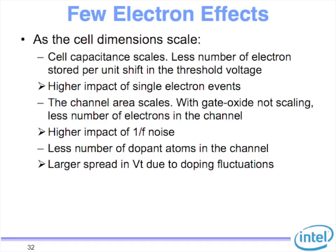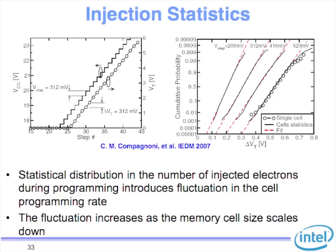We have fewer electrons in the floating gate and also fewer electrons in the channel. If you have some interface states where electrons go in and out, you're going to have 1/f noise, but the impact of that is going to be very large. In addition to that, you are talking about literally hundreds of angstroms of area, so random dopant fluctuations also become very tricky. Work from Micron and ST shows that the statistical distribution in the number of injected electrons during programming introduces fluctuations in the cell — if I try to put 100 electrons, you're going to have variability due to number fluctuations, and this impact increases significantly as the cell size scales down.